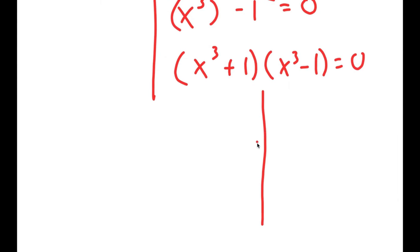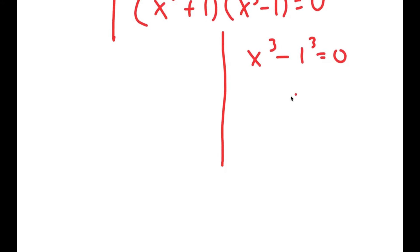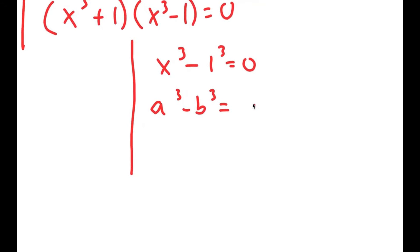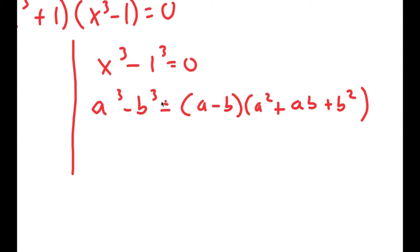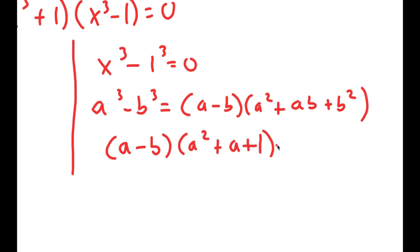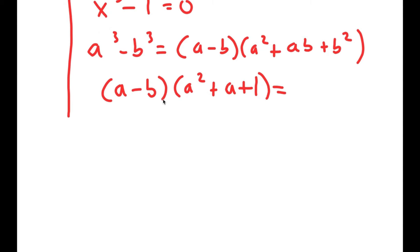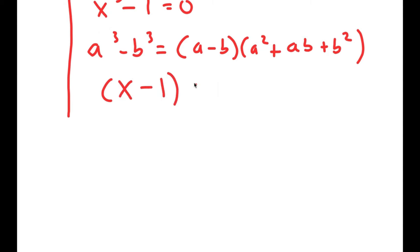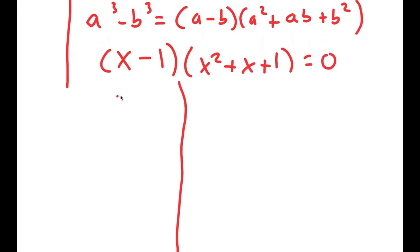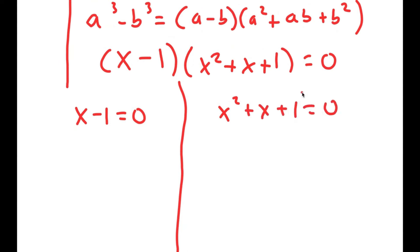Now for x to the power of 3 minus 1 equals 0, I'm going to rewrite this as x to the power of 3 minus 1 to the power of 3 equals 0, so I can use the property a cubed minus b cubed equals (a minus b)(a squared plus ab plus b squared). This turns into (x minus 1)(x squared plus x plus 1) is equal to 0, which gives me two equations: x minus 1 equals 0 and x squared plus x plus 1 equals 0. For x minus 1 equals 0, I add 1 on both sides and get x is equal to 1.